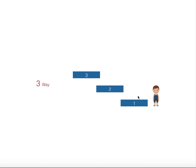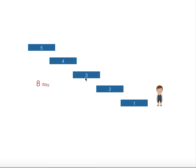If you have three steps, there are three ways: step one, two, three; or step one then directly to step three; or directly to step two then step three. With four steps we have five different ways, and with five steps we have eight different ways.